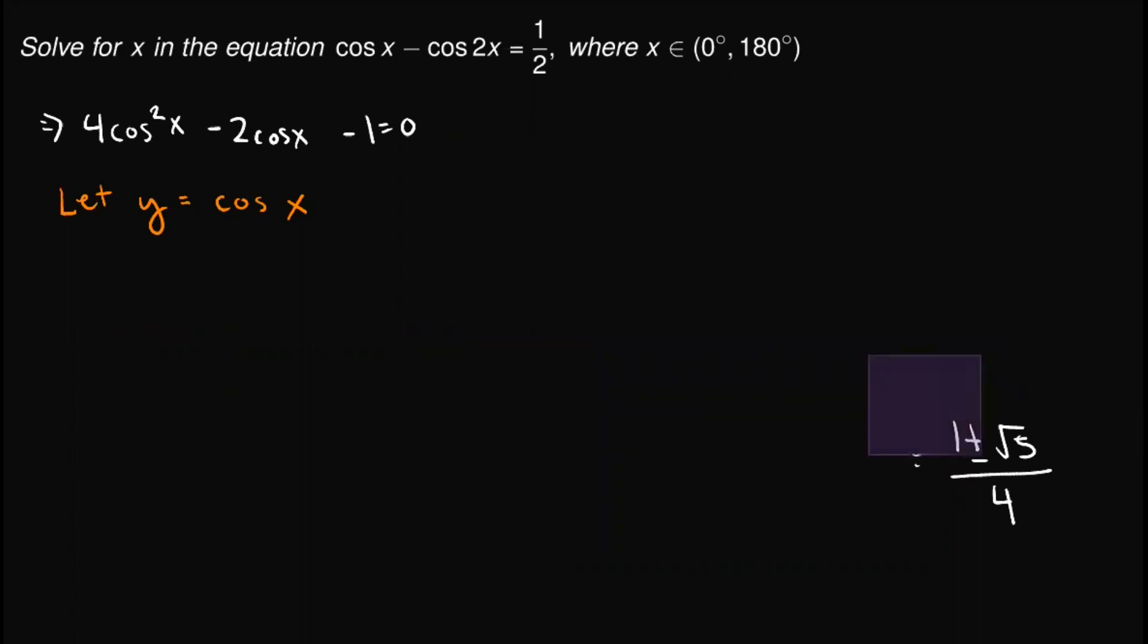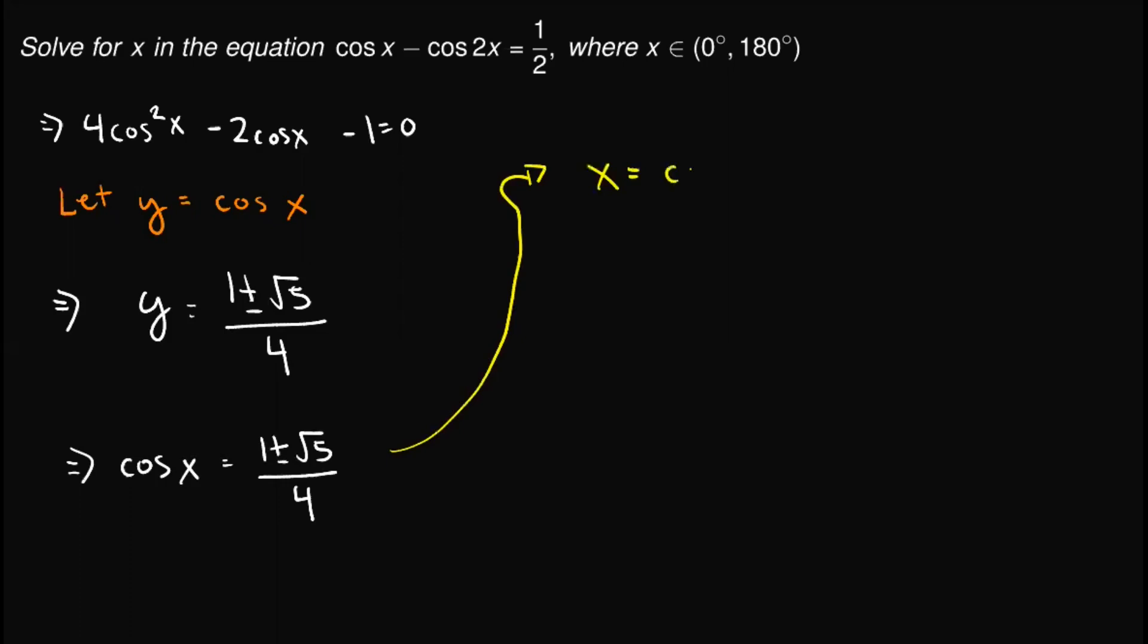So we have found that y is equal to 1 plus minus square root of 5 over 4. Since we know that y is equal to cosine x, then we can write this as cosine x is equal to 1 plus minus square root of 5 over 4. Now, to get the value of x, we simply have x is equal to the inverse cosine of 1 plus minus square root of 5 over 4. And this is actually the answer, but to simplify things, you could use a calculator to solve.